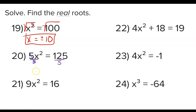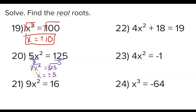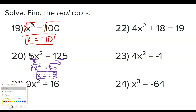Problem 20: I want to get x squared by itself, so I'm going to start by dividing both sides by 5. 125 divided by 5 is 25. Then we square root both sides — the squared cancels — and we're left with x equals plus or minus, because that was an even root, and the square root of 25 is 5. So x = ±5.